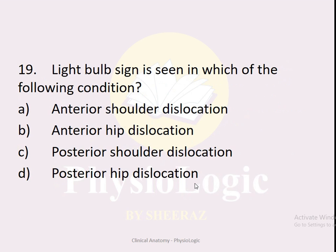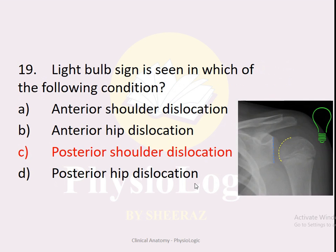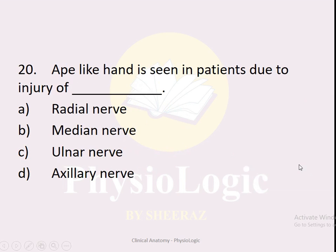MCQ number nineteen: Light bulb sign is seen in which condition? Options: A — anterior shoulder dislocation, B — anterior hip dislocation, C — posterior shoulder dislocation, D — posterior hip dislocation. The correct option is C — posterior shoulder dislocation results in the light bulb sign.